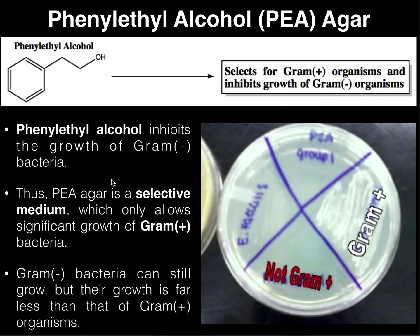One important thing about PEA agar is that you can still have some growth of gram-negative bacteria. It's not bactericidal — meaning it doesn't actually kill the bacteria, it only inhibits their growth. So sometimes you would see a little bit of gram-negative growth, but it shouldn't be anything compared to what you see for gram-positive growth. Here you can see many many colonies in the gram-positive area of the plate, which is what we expect.